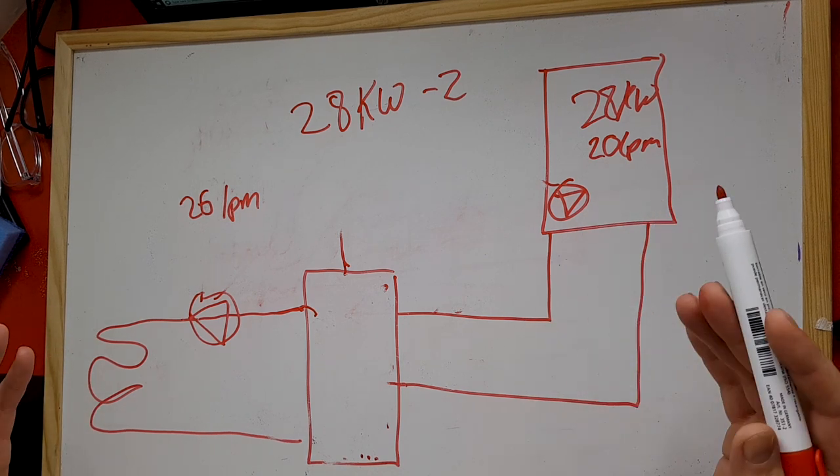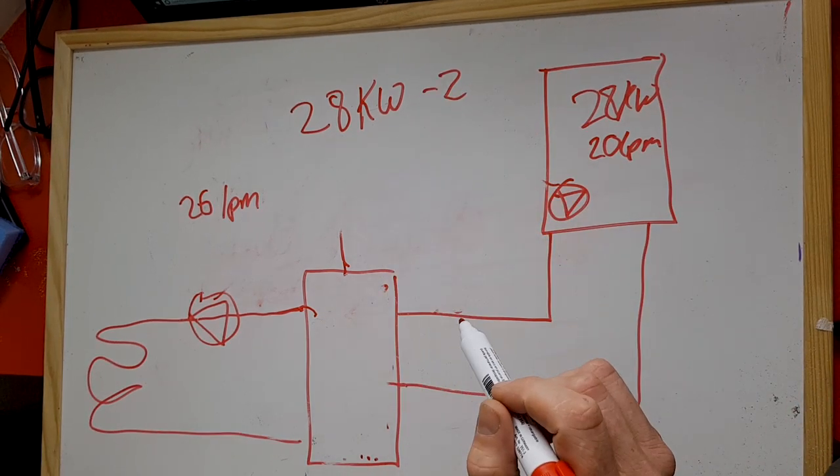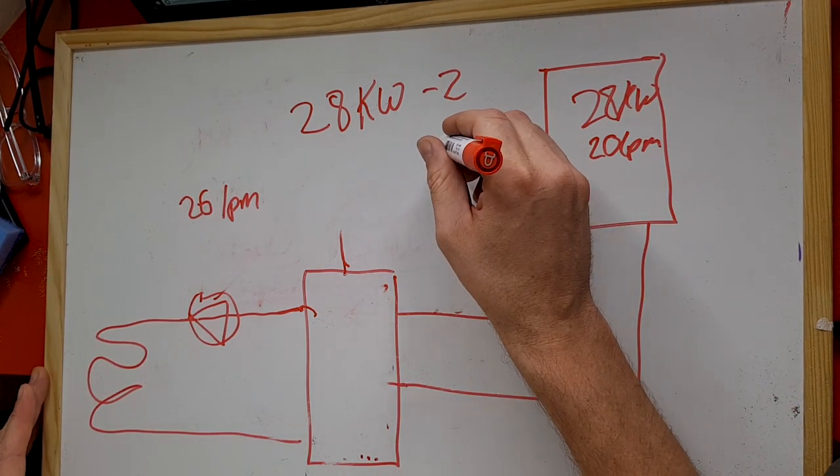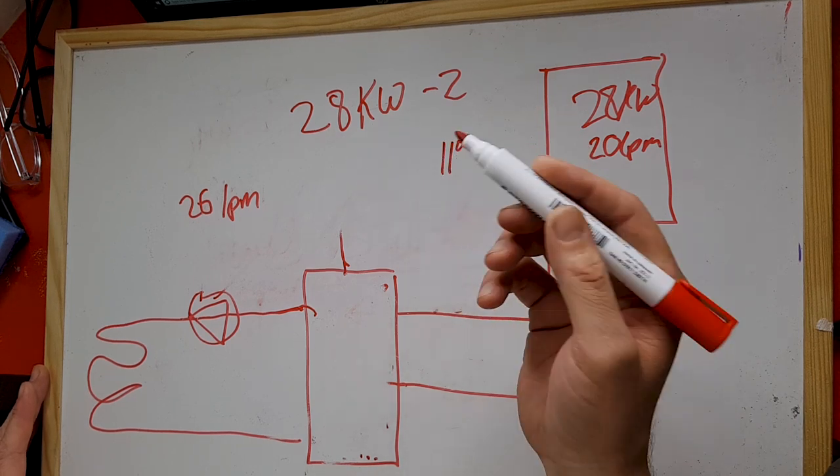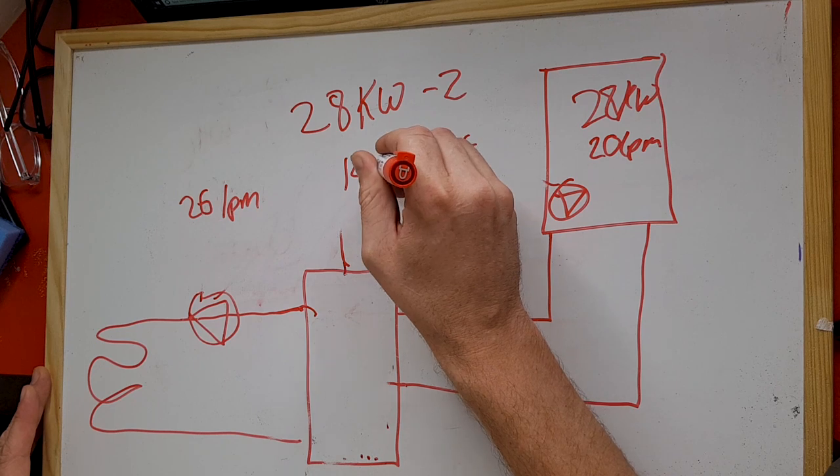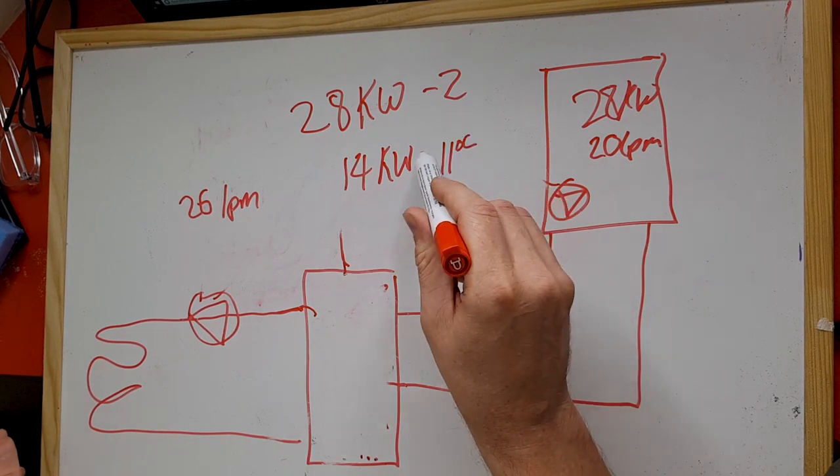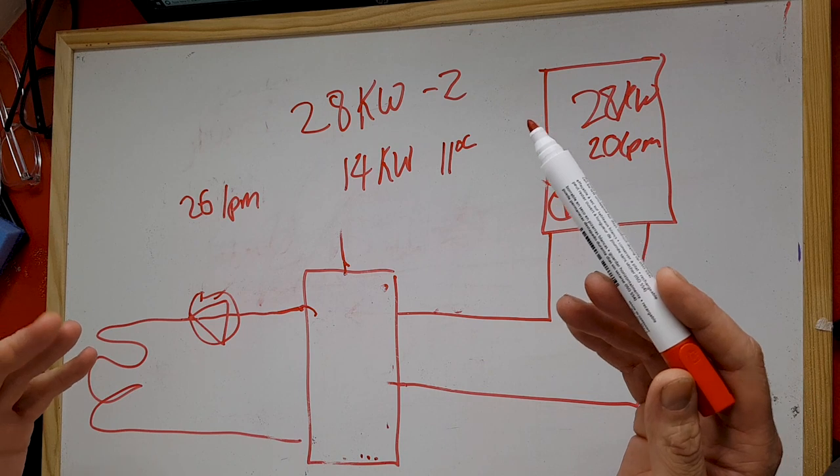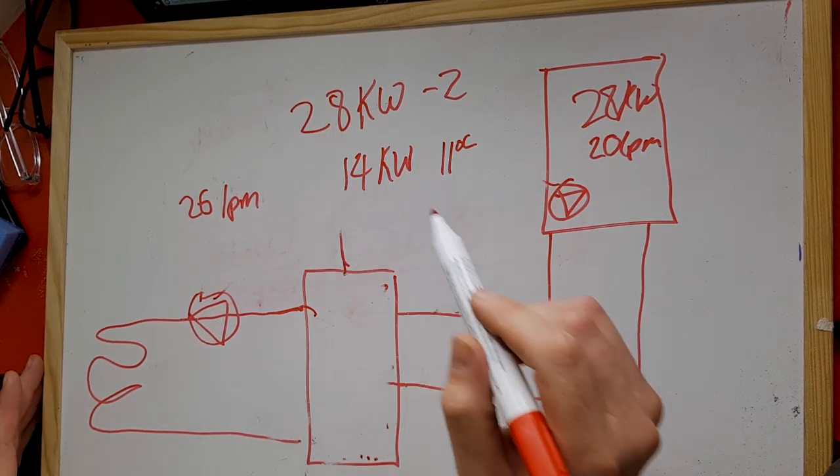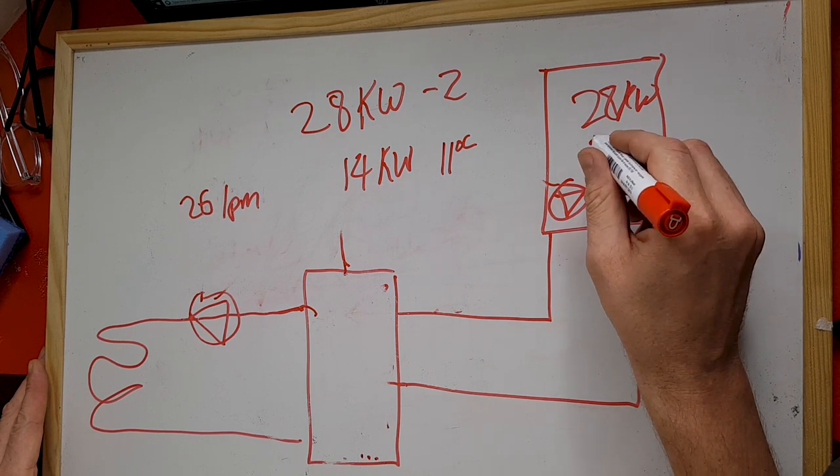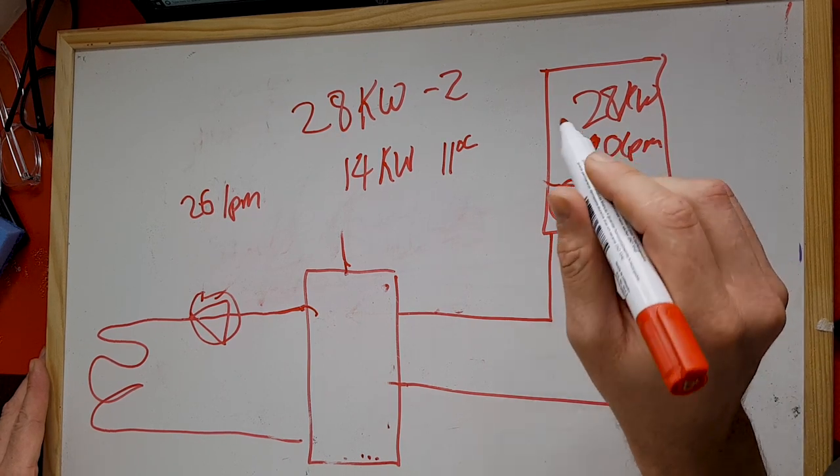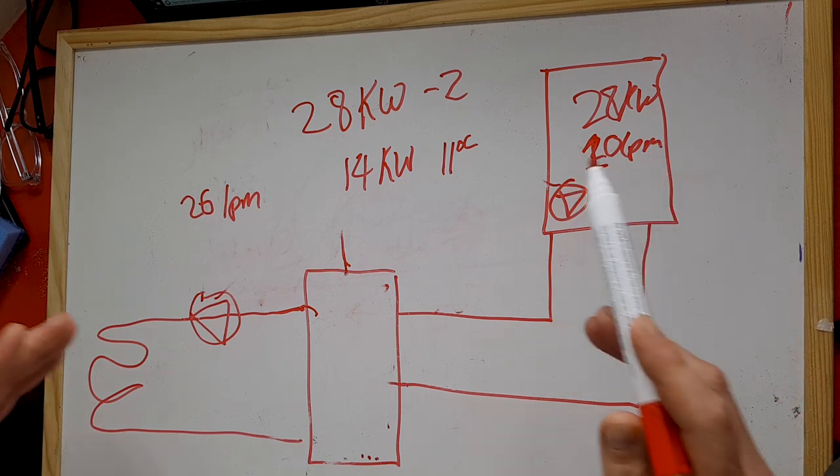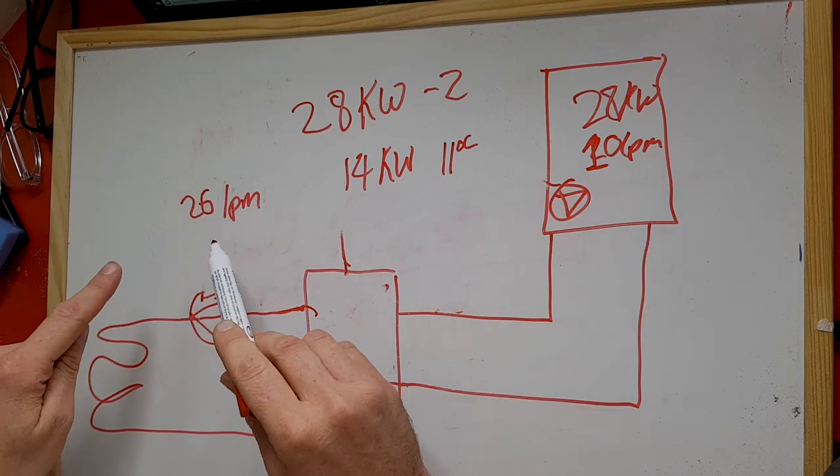The other problem is we're now all installing modulating boilers. When the temperature is not minus 2 outside but actually 11 degrees your load is only going to be 14 kilowatts. Now remember it's actually much more likely to be 11 degrees outside than minus 2. It's only minus 2 around 1% of the year. When it's 14 degrees load your boiler pump is going to run more like 10 litres a minute to maintain Delta T20. So you can see here now we're running 10 litres a minute here, 26 litres a minute here, distortion again, hotter boiler, less condensing, less efficient heat transfer etc etc etc.